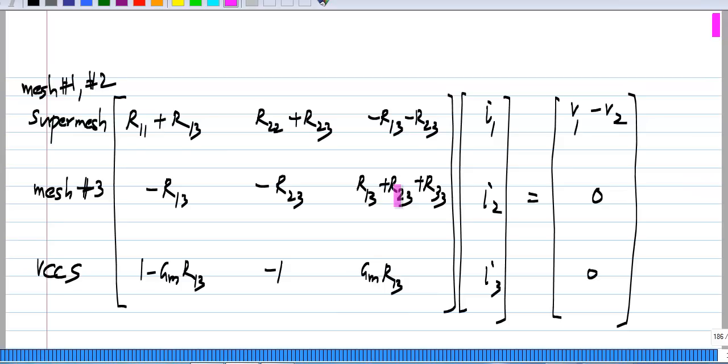And finally, we have the voltage controlled current source, and this is analogous to a current controlled current source with K replaced by GmR13. So, that is all that is there to it. And again, you see that the resistance matrix here is hybrid, it has both quantities with dimensions of resistance in the first two rows, and dimensionless quantities in the third row.